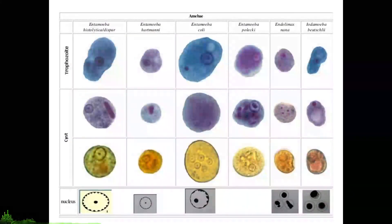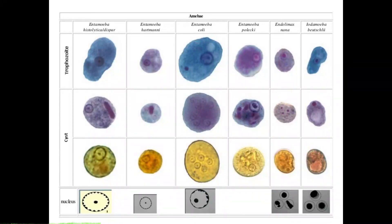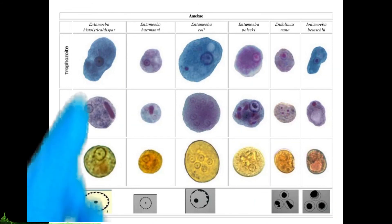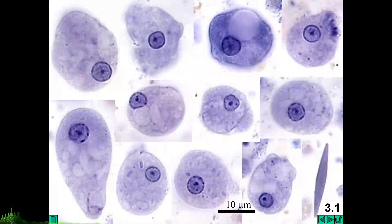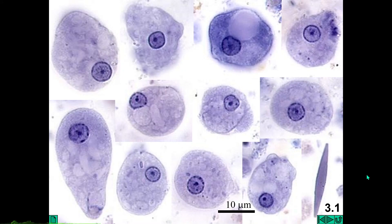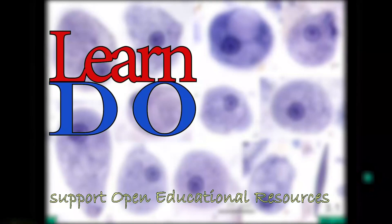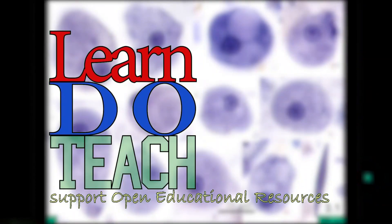The proper implementation of health policies is very important in the battle against amoebiasis. As a final note, here are the different cysts and trophozoites of the different amoebae discussed, with focus on Entamoeba histolytica or dispar. Here also are pictures of Entamoeba histolytica trophozoites. That's the whole point of this lecture — I hope you learned something. If you did, feel free to share this video, and don't stop learning.